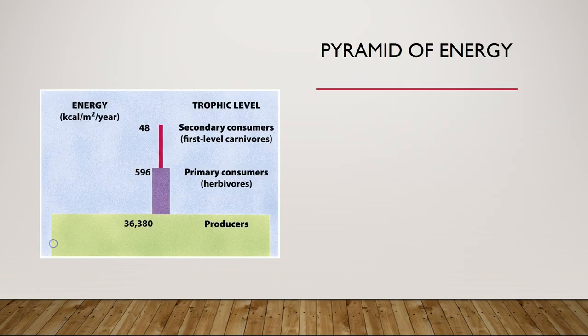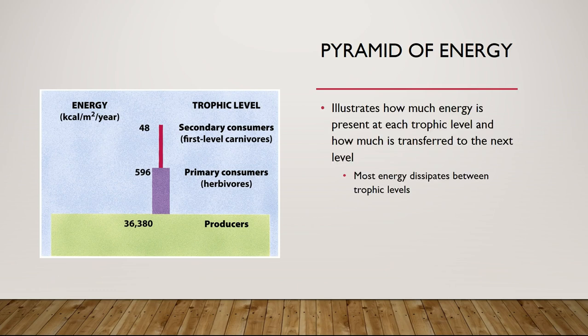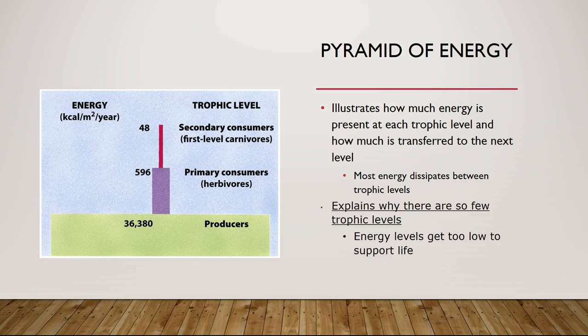Last is the pyramid of energy, and you should notice that same trend: as we move up the food chain, there is a certain amount of energy at a trophic level, some gets used by the organism itself, and much becomes wasted in one form or another. Because of that, we end up with significantly less energy with each successive trophic level. This explains why there aren't very many trophic levels — we can't sustain a fifth-level consumer because there's not enough energy available that far up the food chain.